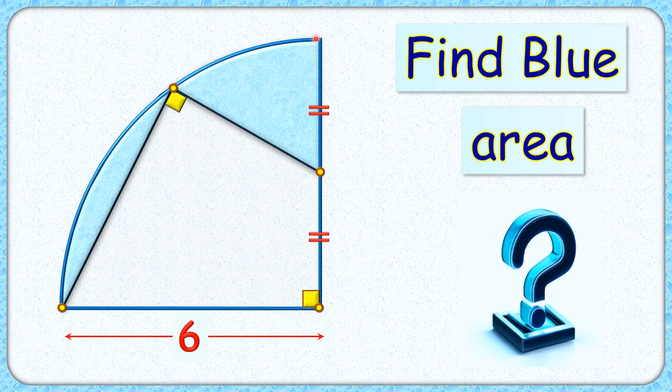This point is a midpoint along this radius. With this given information, we have to find the remaining blue area of this quarter circle.